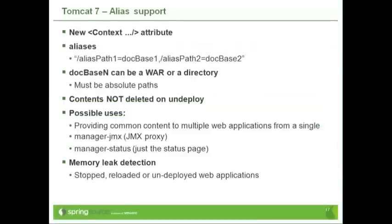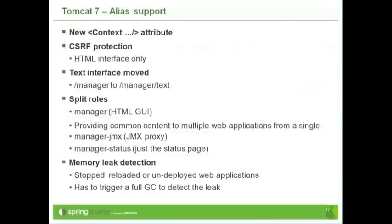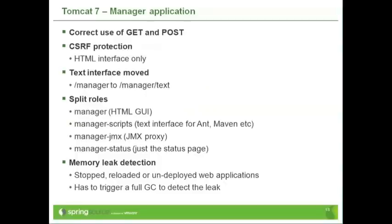With the manager application, Tomcat 7 brings a number of improvements in terms of security. First of all, we've correctly used GET and POST — previously we were using GET for things that really should have used POST, i.e., things that were causing changes on the server. We've sorted that out, and we've added cross-site request forgery protection to the HTML interface.